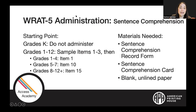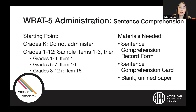For administration, you start with the sample item and then the item number corresponding to the grade level. When administering this subtest, you also want to reach basals. If a student is not having success, you will often need to drop back down to lower levels of administration. This also plays into the other subtests — if the individual is not successful with part two and is not getting correct scores at the beginning, you will drop down to part one to administer those items.